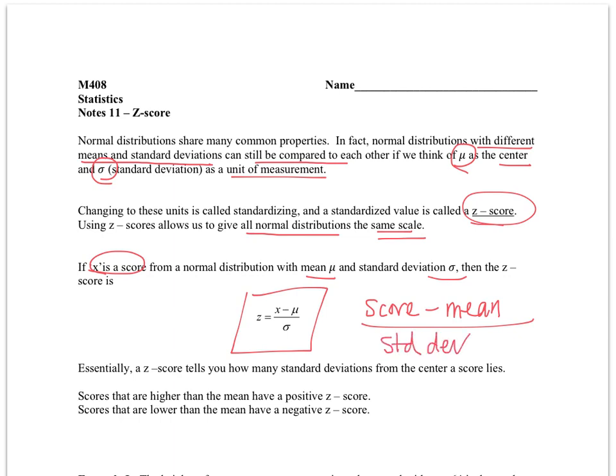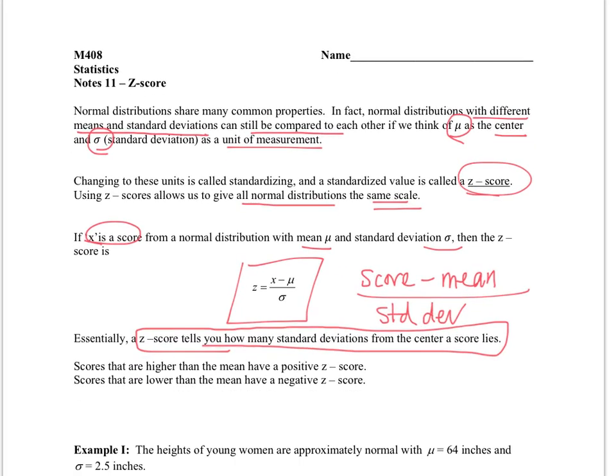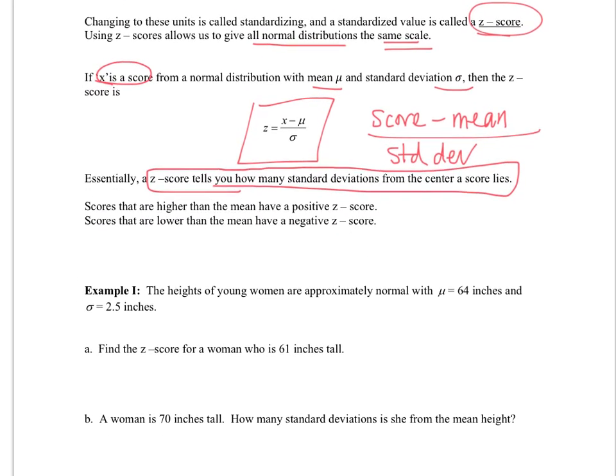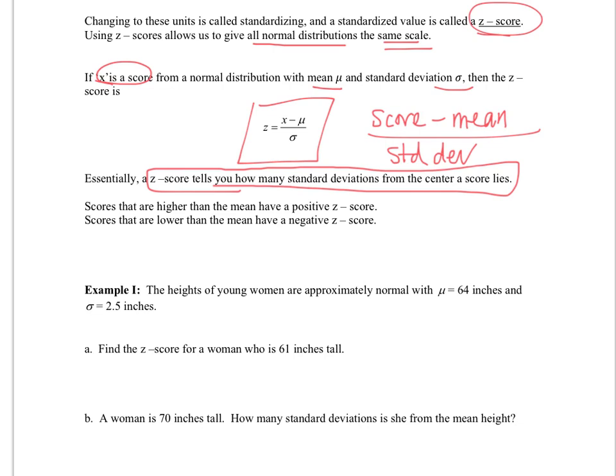What this does is it tells me how many standard deviations I am from the center of data. That's very useful because if I told you, for example, that somebody scored a 75%, you might think, well they got a C.